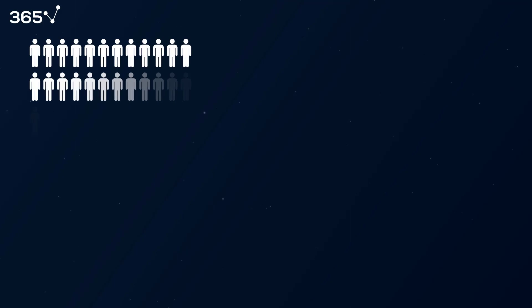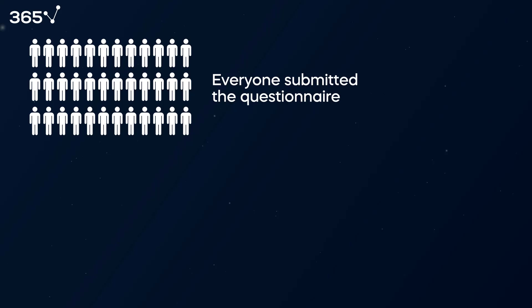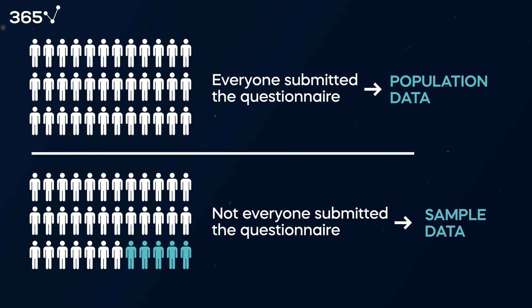Had the teacher been able to collect data from all students in her class, then the data would be from the entire population. A population includes every group member of a group we're interested in, while a sample is a smaller group taken from that population. Even though sometimes, as in this case, we cannot collect data for the entire population, sample data can be beneficial. They can allow us to make informed inferences about the whole population. We'll see how to do that later in the video.